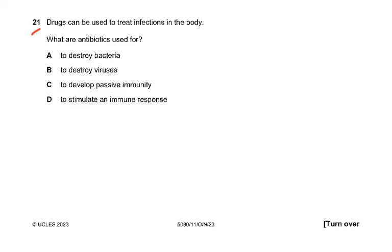Question 21: Drugs can be used to treat infection in the body. What are antibiotics used for? The answer is to destroy bacteria. Antibiotics only destroy bacteria — they do not destroy viruses, they do not develop passive immunity, and they do not stimulate an immune response. They are chemicals used to kill bacteria, so they are only given in bacterial diseases.